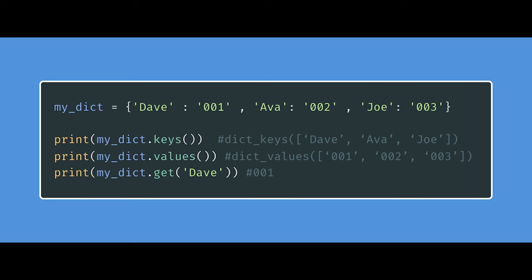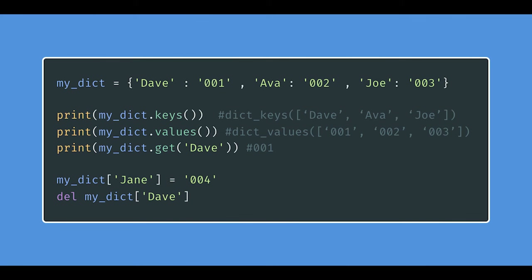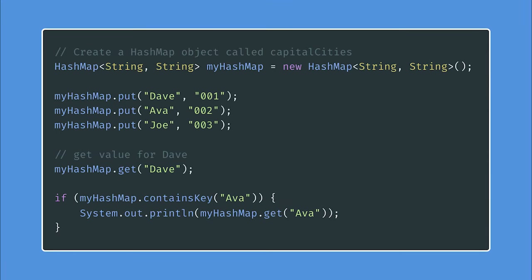In languages like Python and JavaScript, using a hash map is as easy as using curly braces. In Python we have dictionaries — same concept: key-value pairs. You can access keys with dot-keys, values with dot-values, or get a particular value with .get() passing in the key. It's straightforward to insert and remove values. In Java, the syntax is more complicated: you use the actual word 'HashMap', specifically declare the types for the key and value, and use .get() and .put(). You can also check if a value is already in the hash map. This stuff is pretty language-specific — just look it up for your language of choice.